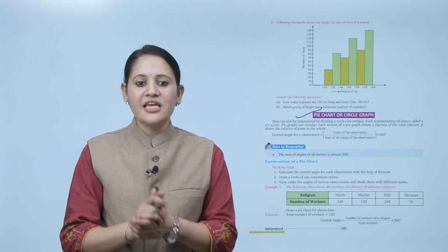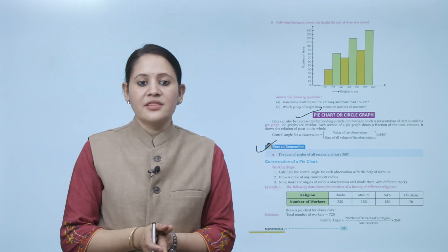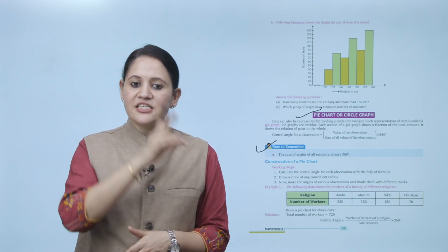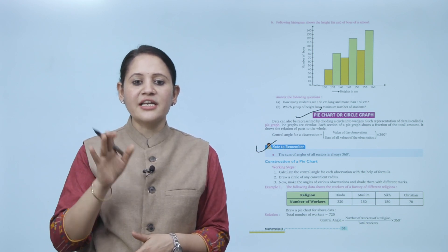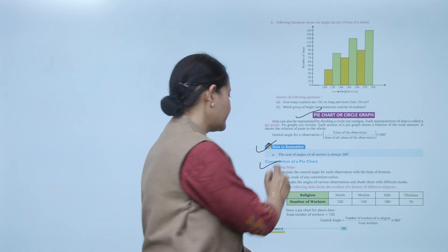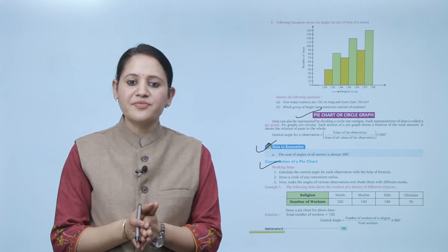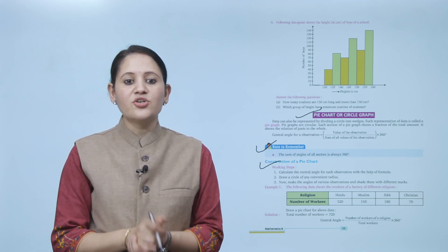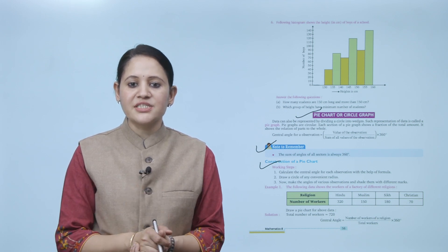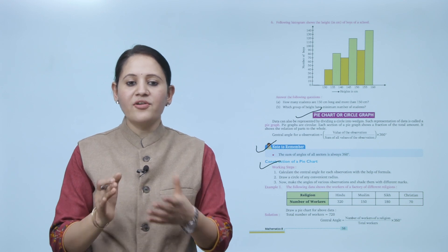Note to remember: the sum of angles of all sectors is always 360 degrees. Construction of a pie chart steps: calculate the central angle for each observation using the formula, draw a circle of any convenient radius, make angles for each observation, and shade them with different marks.